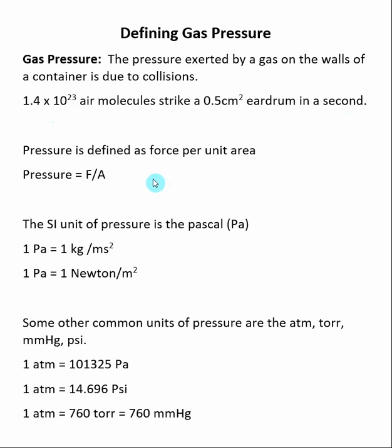Pressure is defined as force per unit area or force divided by area. The SI unit for pressure is the Pascal, which is one kilogram per meters per second squared. A Pascal also has the unit of one Newton per meter squared.